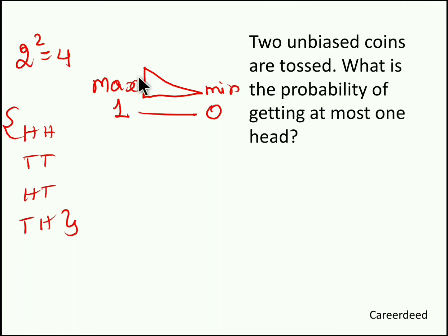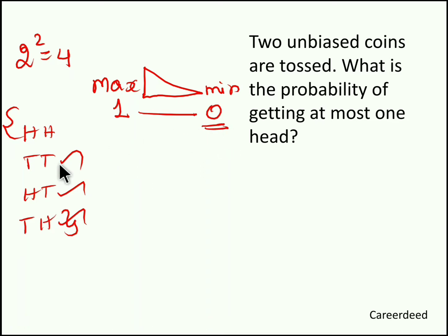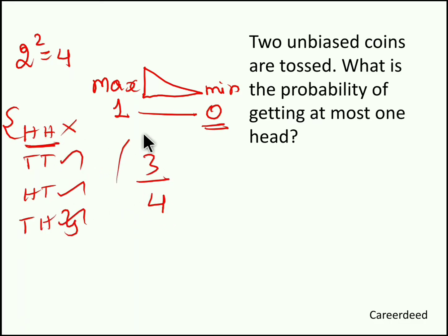While tossing two coins you need to find where you get maximum one head. Tail-head has one head — accepted. Head-tail has one head — accepted. Tail-tail has zero heads — accepted, because minimum can be 0. But head-head has two heads, so this is not accepted. Out of four, three are acceptable. So 3 by 4 is the probability of getting at most one head.